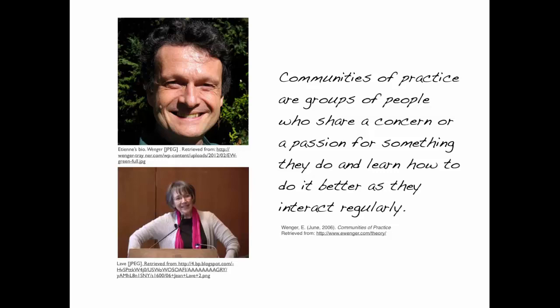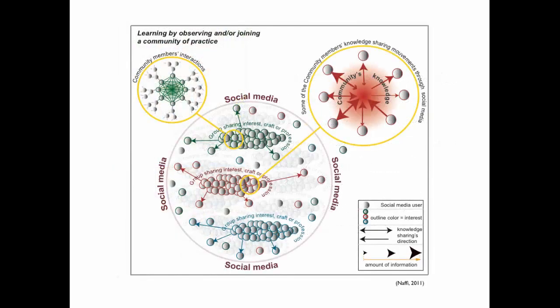Members of a community of practice all experience different levels of participation. While some are fully engaged in enhancing the community's knowledge, experiences and skills and learning at the same time, others start by peripheral activities. They observe and analyze the members' behaviors, reactions, and feedback, and they evaluate the information without really interacting a lot with the community until they get familiarized with its members and ongoing activities and become confident enough to intervene. Then they move from legitimate peripheral participation into full participation.